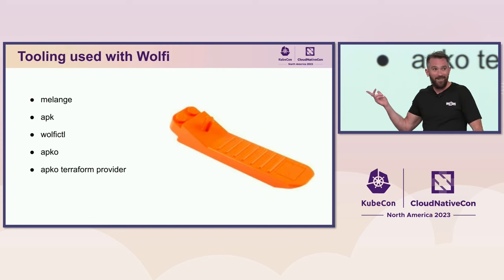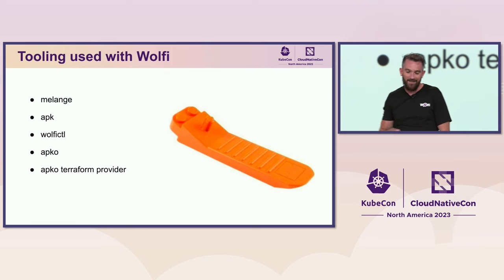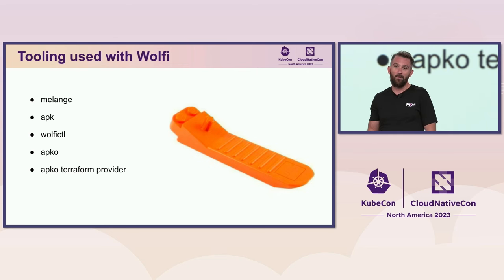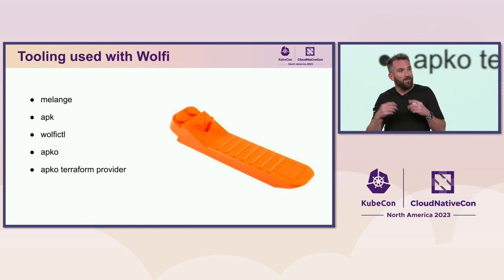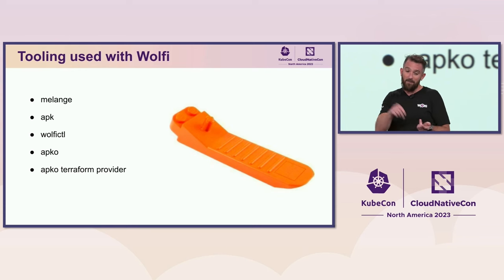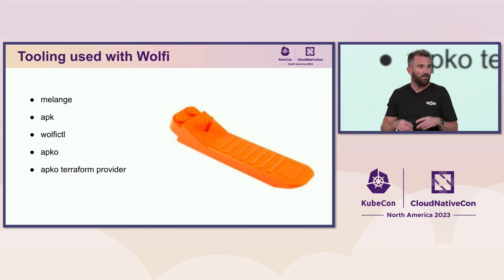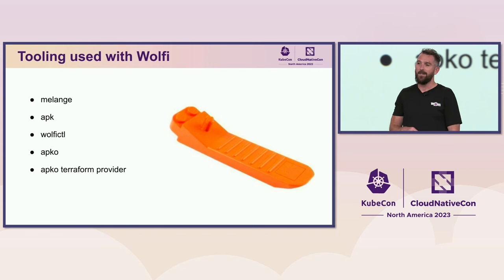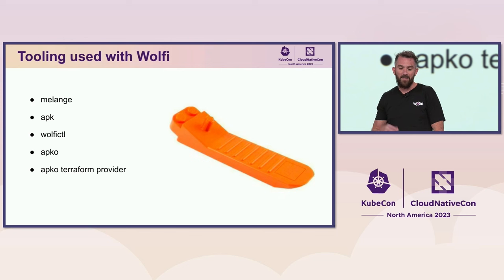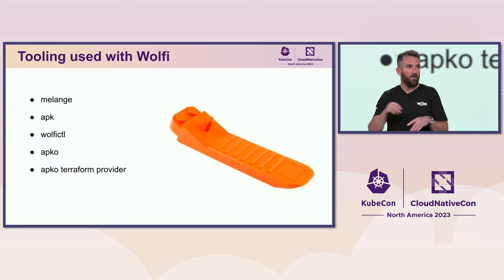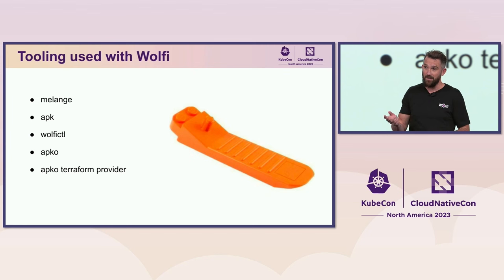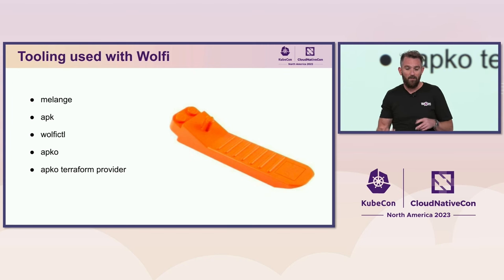So this is the orange thingamajig I was talking about earlier — it's transformed working with Lego, at least recently. We have tools for working with Wolfi as well. We've got Melange, which is used to build these APKs. And then APK itself. We have a tool called Wolfi CTL — that's really helping us maintain Wolfi. There are linters in there, there's the update bot code, there are ways to create advisories. This is really helping us automate and build better around Wolfi itself. When we want to take those APKs and build images from them, we use a tool called APKO. And there's also a Terraform provider as well.